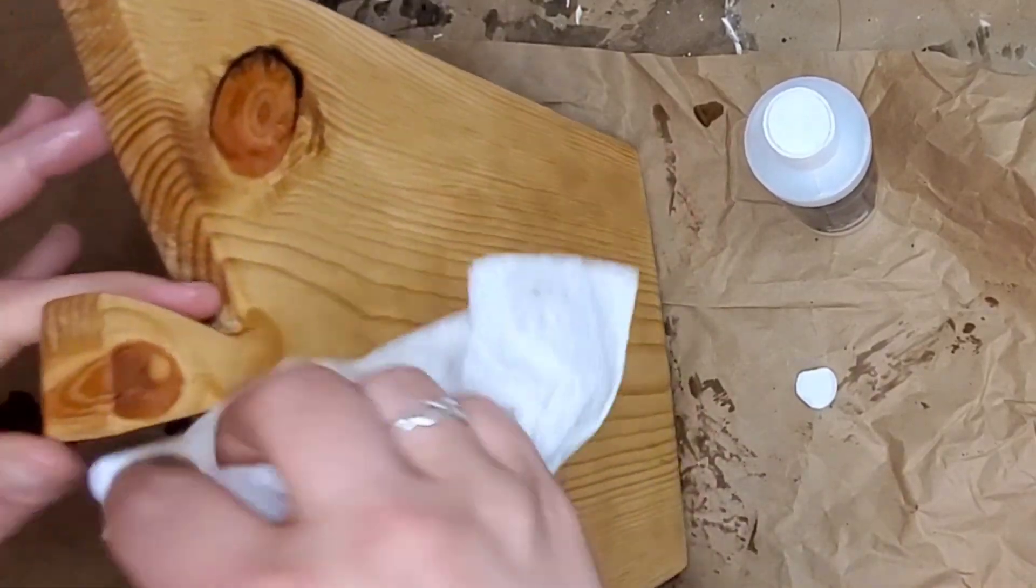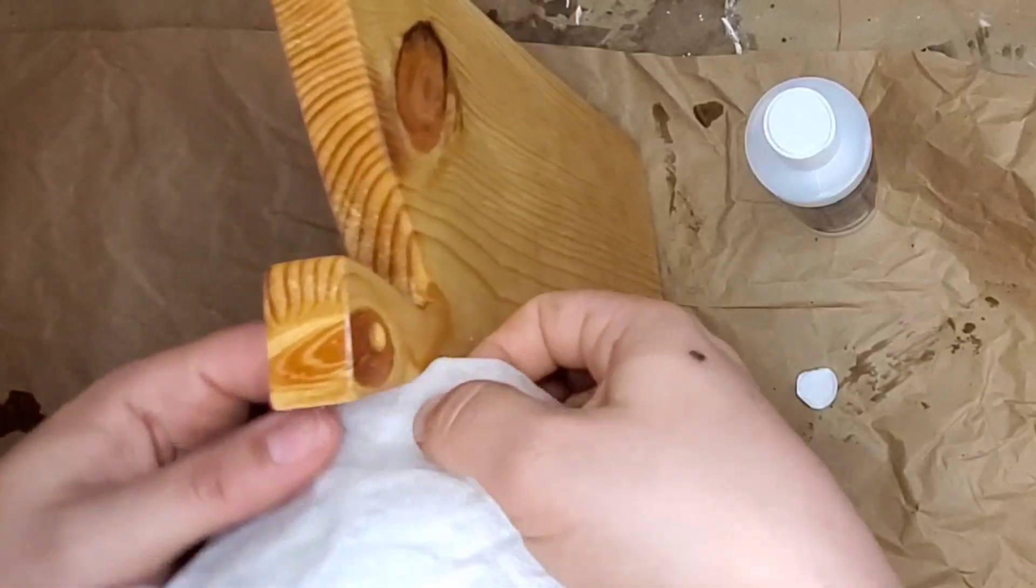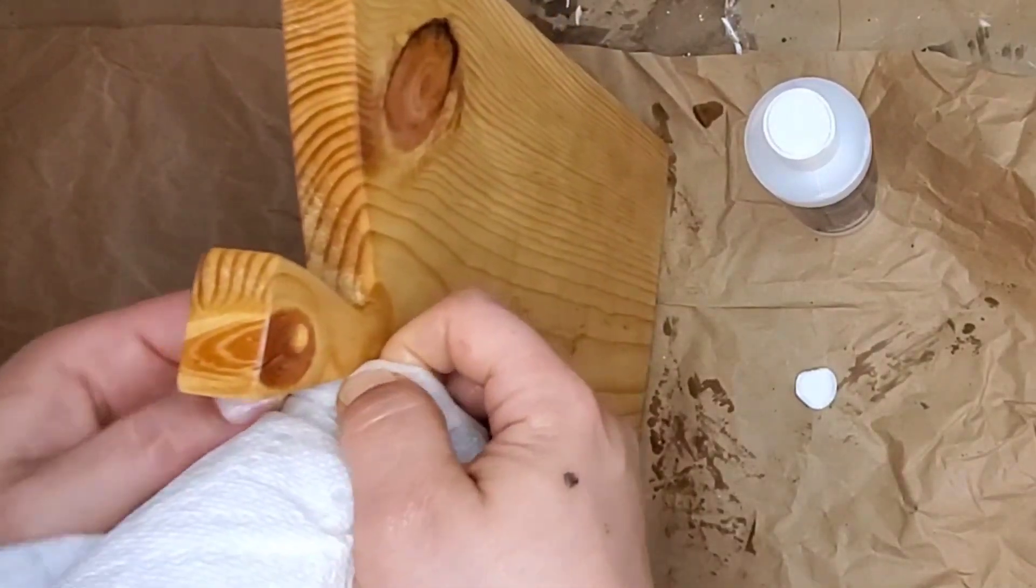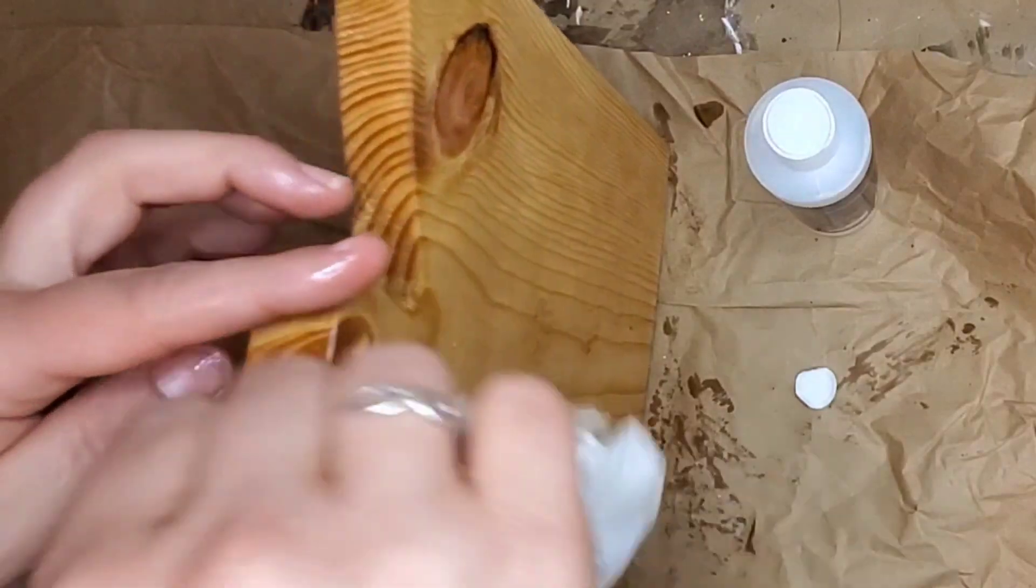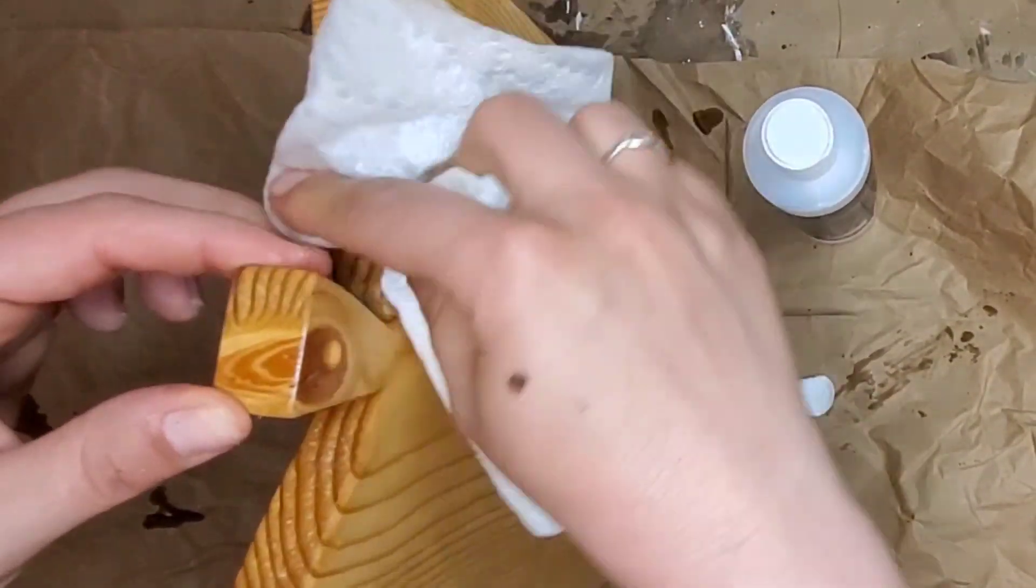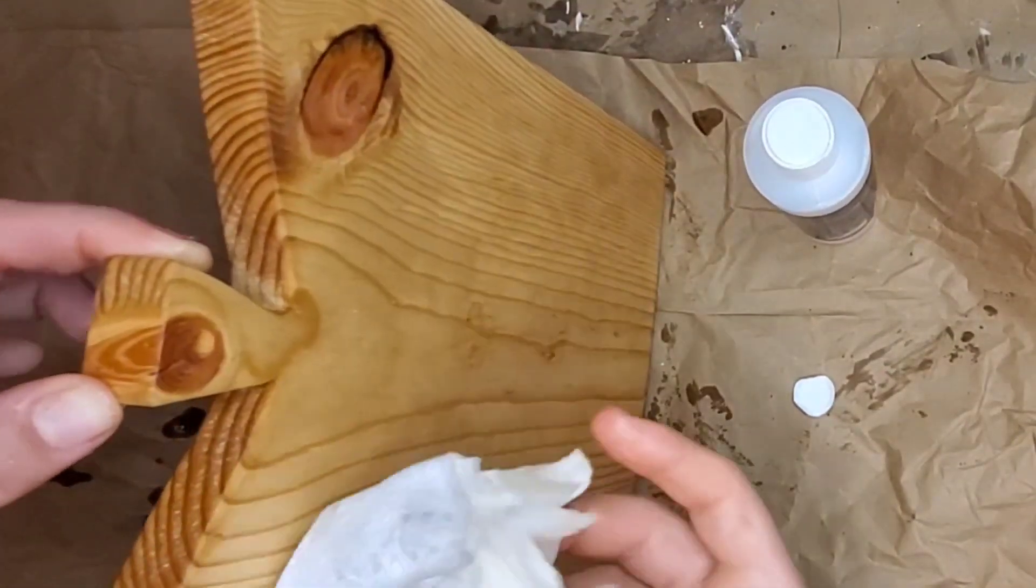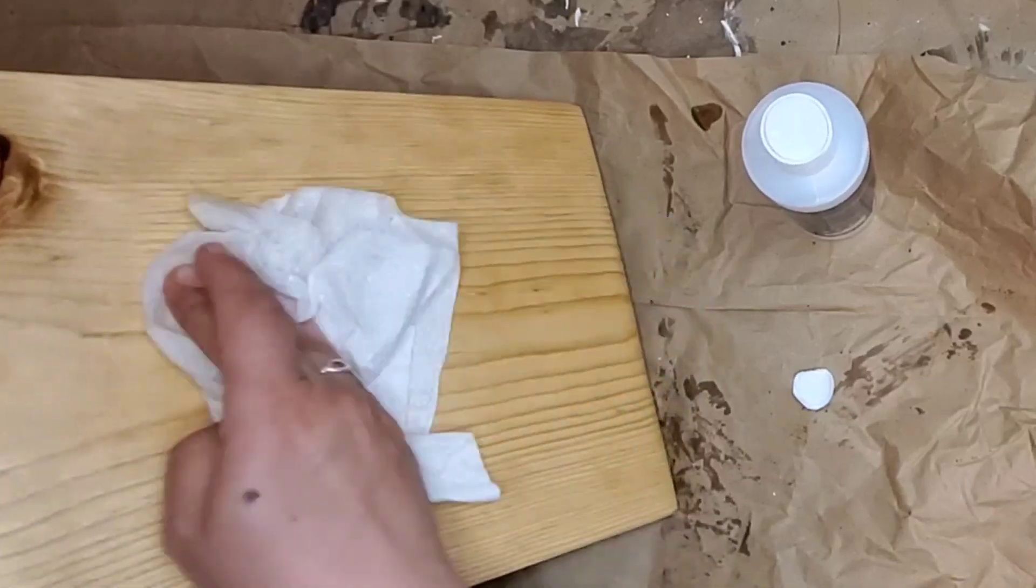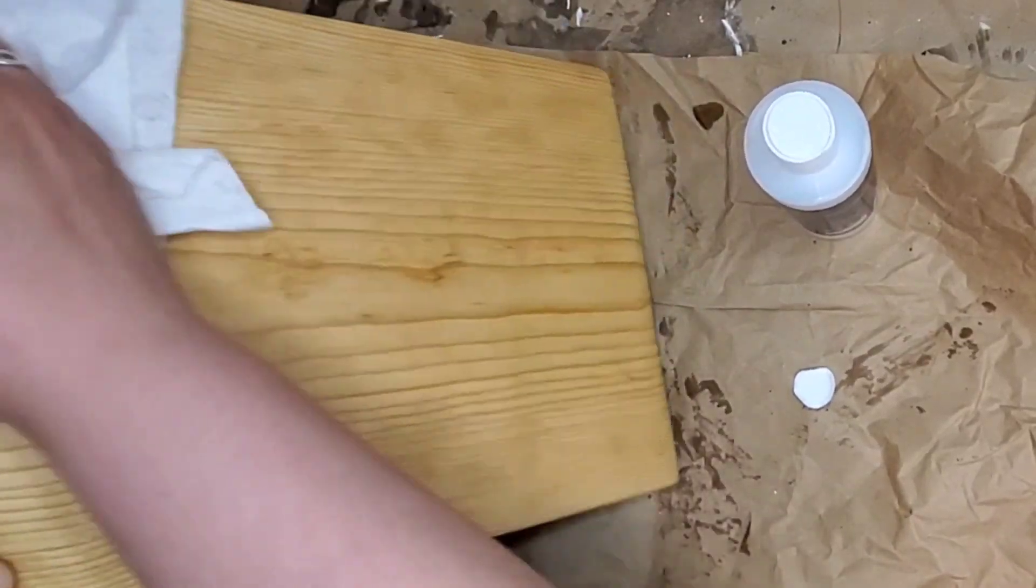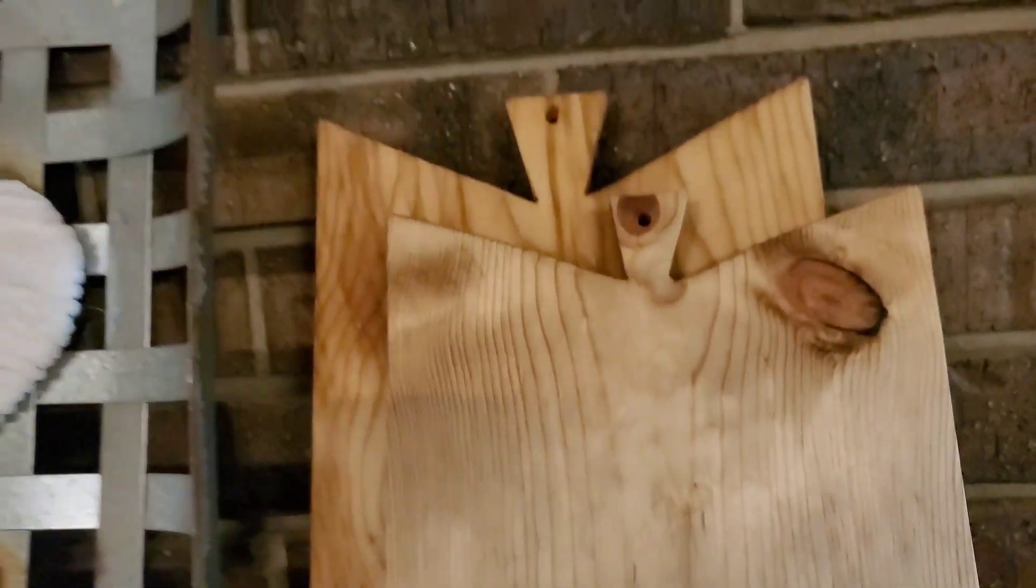After it's all dried, this is such an easy, simple thing to do with a one by ten or a one by eight or one by six, however you want your cutting board to be. And a simple tool—a jigsaw from Walmart—so you're not much into the tools and you're not much into the wood. This is the great scrap wood kind of project to do, and I absolutely love how they turned out. Let me know in the comment box what you think.